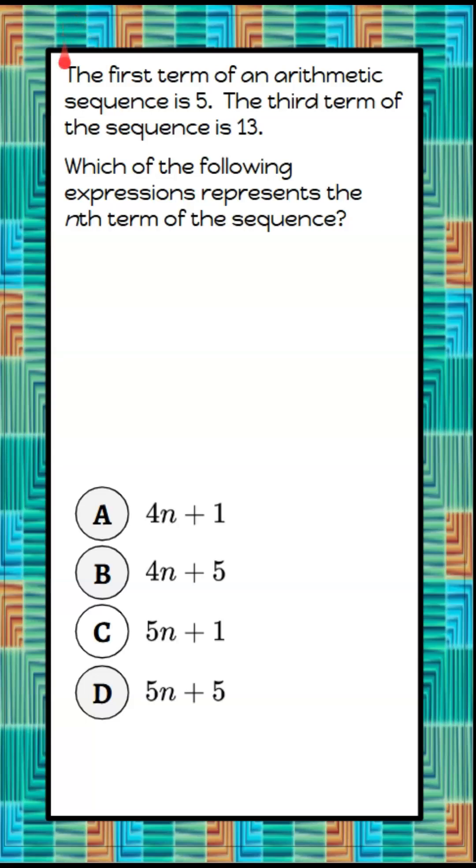Here's our question. We're told that the first term of an arithmetic sequence is 5, the third term of the sequence is 13, and we're asked which of the following expressions represents the nth term of the sequence.